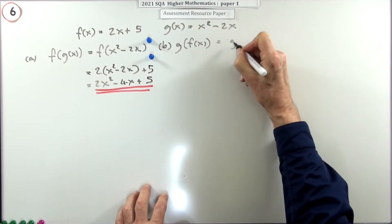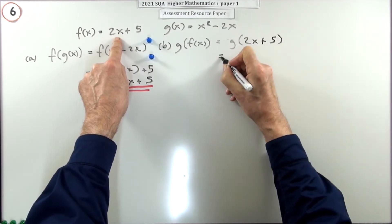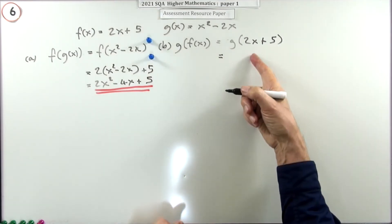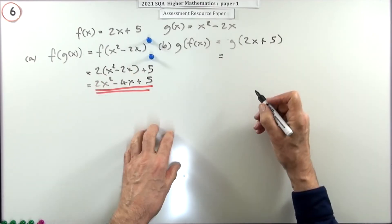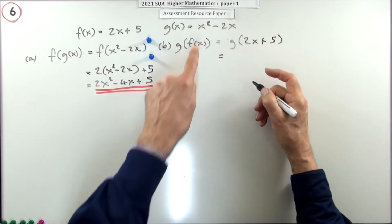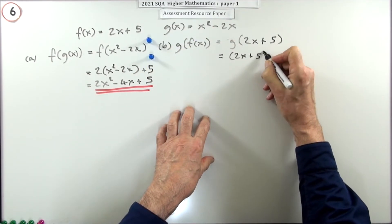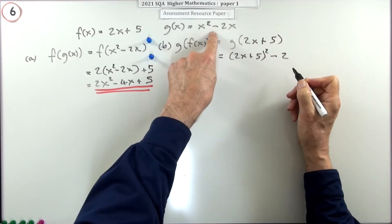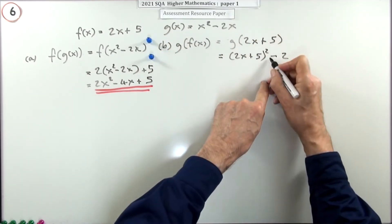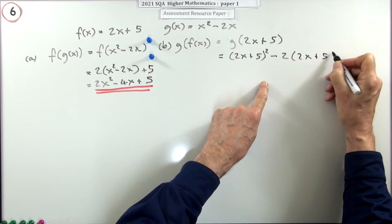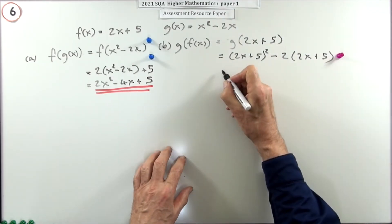Similarly, f of x is 2x plus 5. This time you won't get the mark for just writing that, because you've already demonstrated you know what it means in part a. What does g do? Whatever you put in, it squares it — so if you put in this expression it will square that whole expression — and then it takes away two of whatever you've put in.